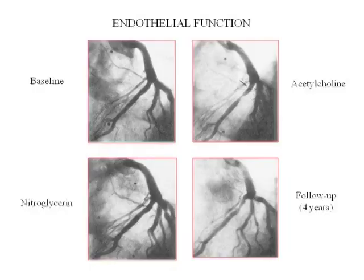How do we measure endothelial function? Here's an individual that has a coronary angiogram showing only a modest 20-30% narrowing. In the cath lab, you inject acetylcholine into the coronary artery. Acetylcholine is an endothelium-dependent vasodilator — if the endothelial cells are functioning normally, in response to acetylcholine you make nitric oxide and the vessel dilates.